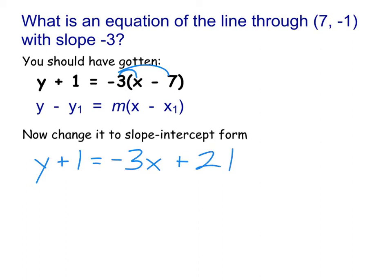Okay. We're close now to slope-intercept form, but not quite there. Because, remember, slope-intercept form is the y equals form. That means I've got to get rid of that 1, so we subtract 1 from both sides. If I do that, then I end up with y equals negative 3x plus 20. That is your final answer. That is slope-intercept form.